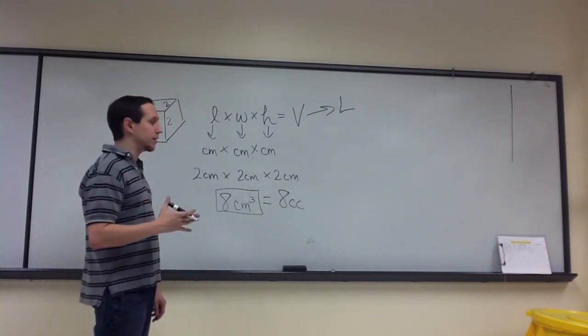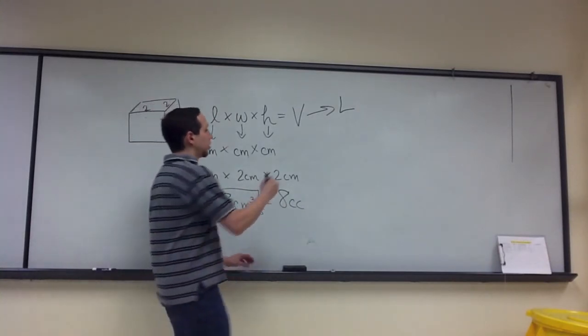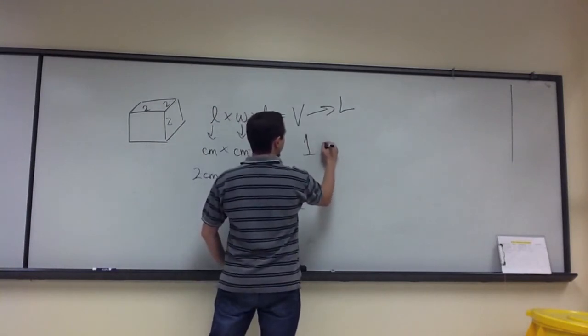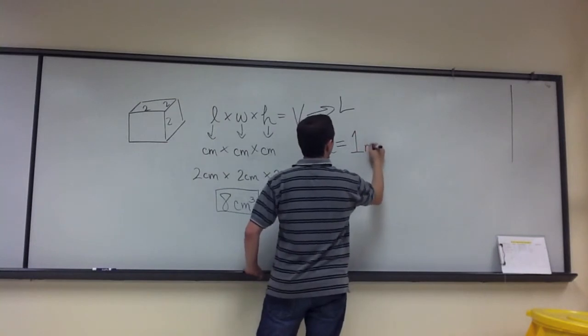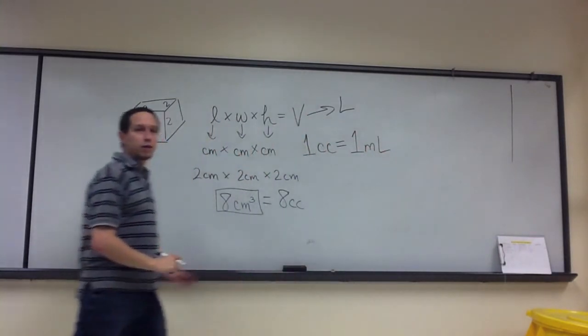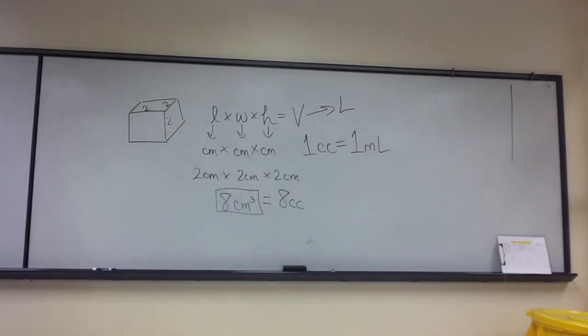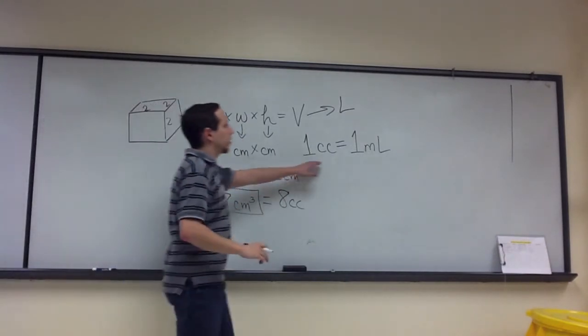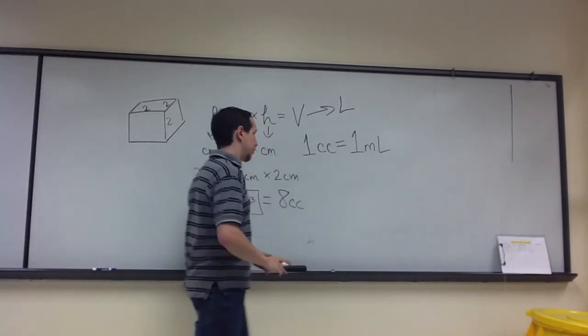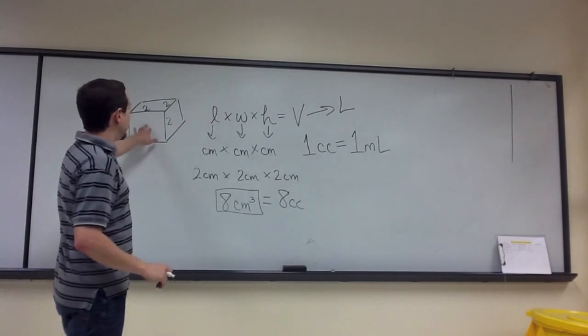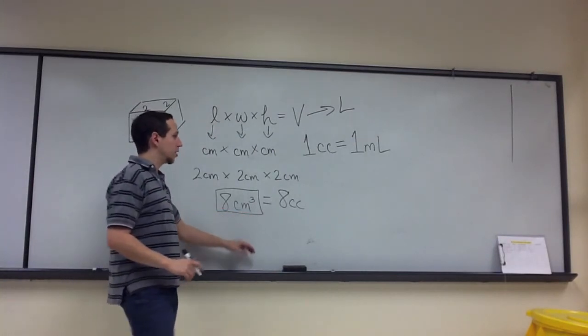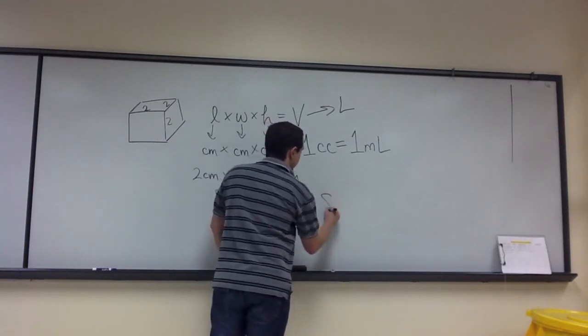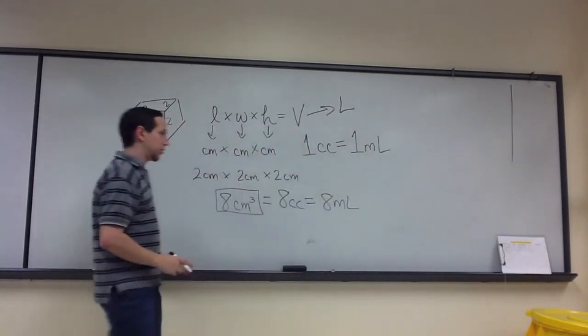More interestingly, one cubic centimeter, or one cc, equals one milliliter. And this is true for all liquids. So one cubic centimeter equals one milliliter. Which means this cube, which is capable of holding eight cubic centimeters, is capable of holding eight milliliters.